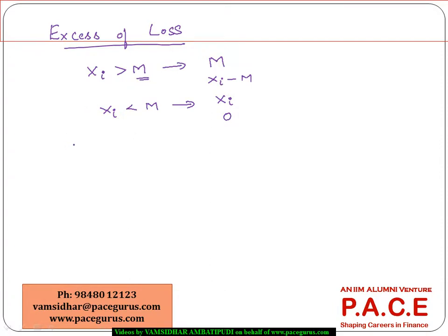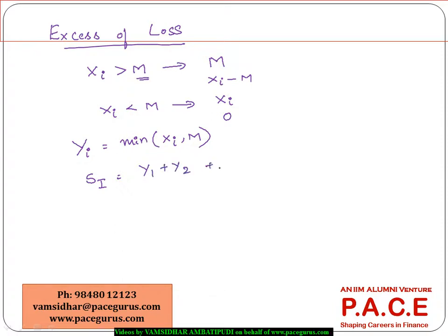So if you look at the kind of payments from the insurer's perspective with this excess of loss reinsurance with retention level M, the insurer's payment for an individual claim Y_I is the minimum of either X_i or M. If X_i is greater than M, the insurer pays M. If X_i is less than the retention level, the payment is the claim amount itself. So this is the typical individual claim from the insurer's perspective, meaning the aggregate claim amount from the insurer's perspective is Y_1 + Y_2 + ... + Y_N.